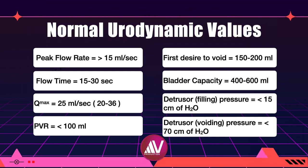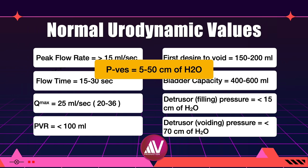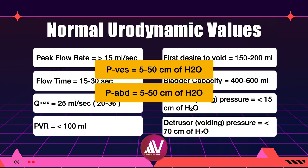Here are the normal values for various parameters measured during UDS — perhaps the most important slide a student must remember, as you cannot answer MCQs in examinations without knowing these. Peak flow rate should be equal to or greater than 15 ml per second. Flow time should be 15 to 30 seconds. Q-max should be 25 ml per second, range 20 to 36 ml per second. First desire to void will occur at 150 to 200 ml. Bladder capacity should be 400 to 600 ml. Detrusor filling pressure should be less than 15 centimeters of water and detrusor voiding pressure should always be less than 70 centimeters of water. Post-void residual volume should be less than 100 ml. P-VES normal range is 5 to 50 centimeters of water. P-ABD normal range is 5 to 50 centimeters of water. P-DET is 5 to 15 centimeters of water.